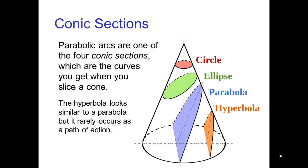Parabolic arcs are one of the four conic sections, which are curves that you get when you slice a cone. The other three conic sections are circles, ellipses, and hyperbolas.